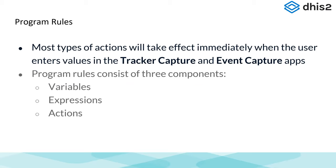Most actions using program rules will happen immediately when the data values are entered — exactly as you saw me doing. As I was putting values in, something happened immediately. A program rule, in terms of how it's configured, constitutes three things: variables, expressions, and actions.